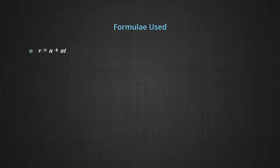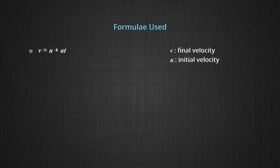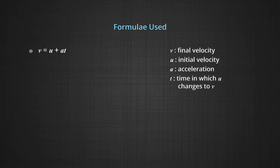Before going to the numericals, we have to discuss about the formulas which we use here. Formula number 1 is V = U + AT, where V stands for the final velocity, U stands for the initial velocity, A is the acceleration and T is the time in which U changes to V.